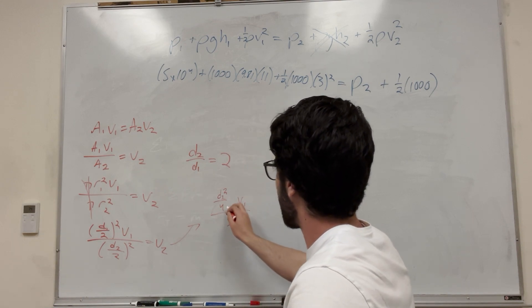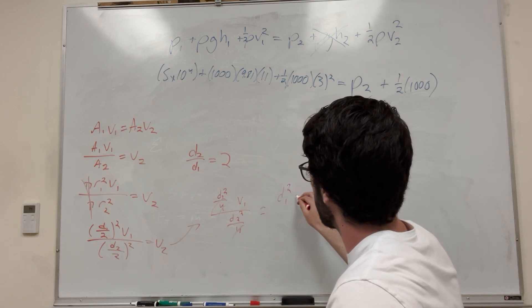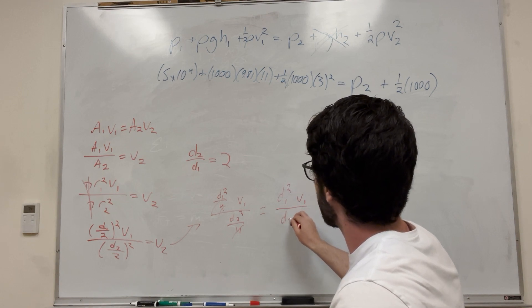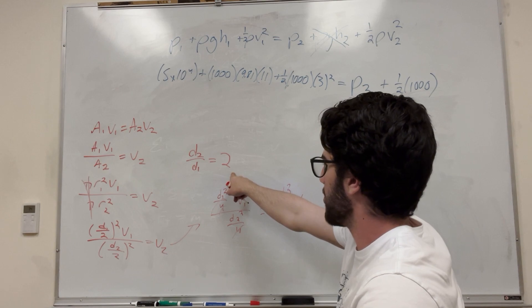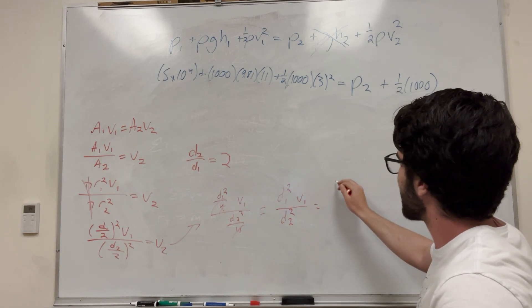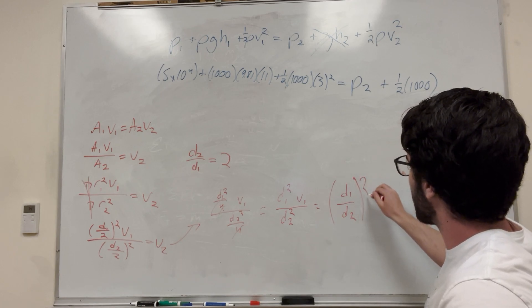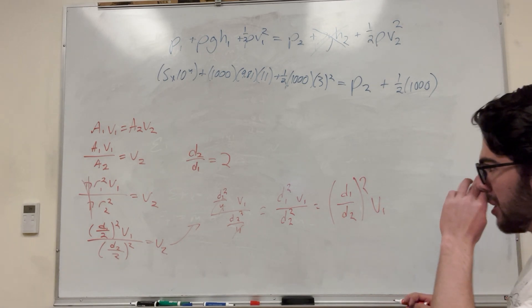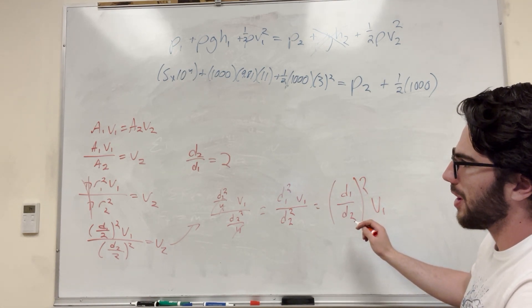These over 4s are going to get cancelled out, right? So that just becomes diameter 1 squared velocity of 1 over diameter 2 squared. We have diameter 2 over diameter 1 is equal to 2. So, I'm going to rewrite this as diameter 1 over diameter 2 squared times the velocity of 1. So if we have diameter 2 over diameter 1 is equal to 2, then diameter 1 over diameter 2 is equal to one half.